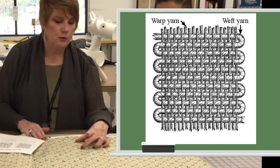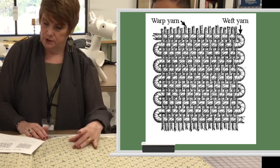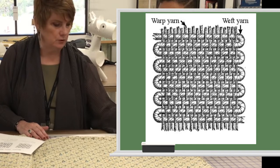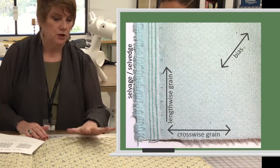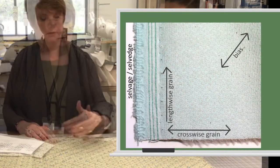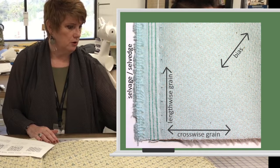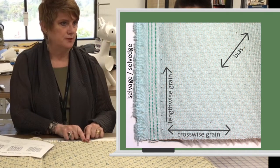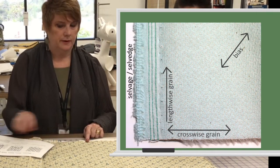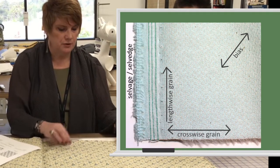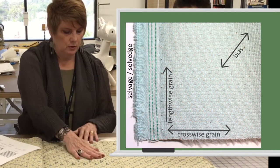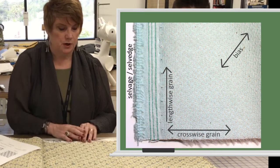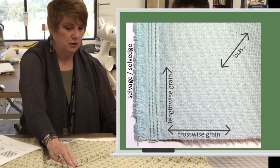When they say straight with the grain, they're talking about straight with the warp, which is lengthwise. On garments, this is the vertical. Cross grain is weft. Plain weaves do not stretch on the warp, there's a little bit of stretch on the weft, but they do stretch on the bias.